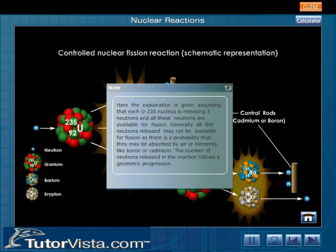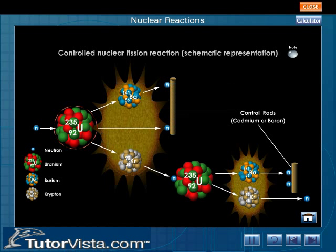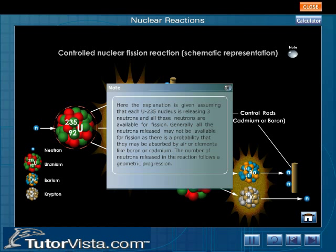The uncontrolled fission reaction can be controlled and the heat energy released can be used to produce electricity. Given here is a schematic representation of a controlled fission reaction. A slow-moving neutron is made to hit a nucleus of U-235, and out of the three neutrons released, only one is made to hit another nucleus of U-235. That is, the number of uranium atoms undergoing fission is constant at any given time.